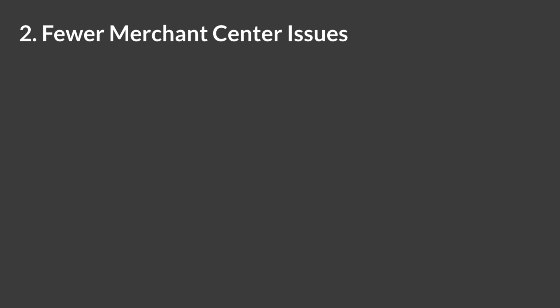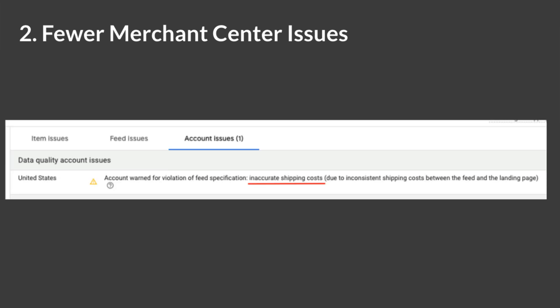Another benefit is fewer Merchant Center issues. Shipping cost discrepancies in Merchant Center can lead to product disapprovals and even account suspensions. Someone recently asked me to help with his Merchant Center account suspension warning. It turned out shipping was not configured at all. Because he was using UPS ground carrier service for shipping, I resolved the issue relatively quickly with the steps I'm going to describe below. In fact, that case was the inspiration for this video.